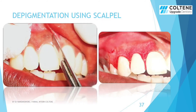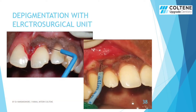Let us compare depigmentation procedures using scalpel and electrosurgery. You can see the outcome of a depigmentation procedure done with a scalpel — how blood-filled and raw the depigmented area is. On the other hand, with the use of an electrosurgical tip, clean incisions can be given, and the depigmentation can be done with little pain and practically no bleeding. The healing will also be very nice.